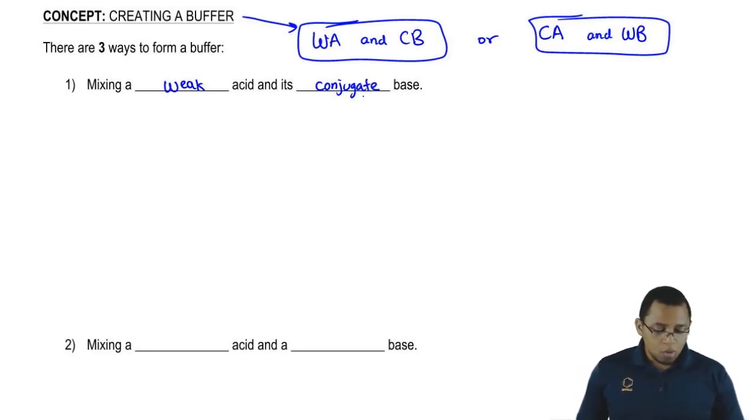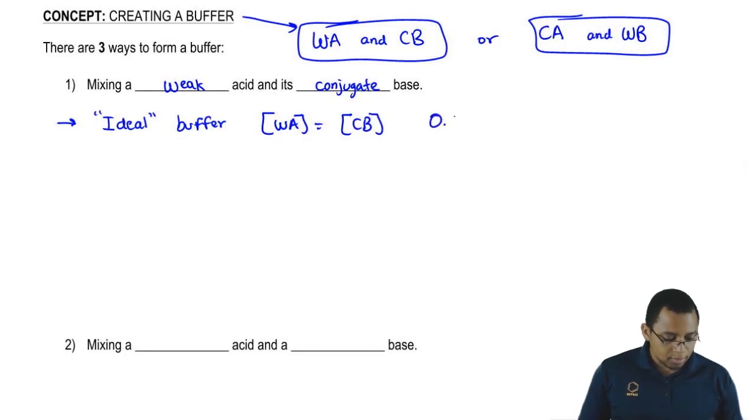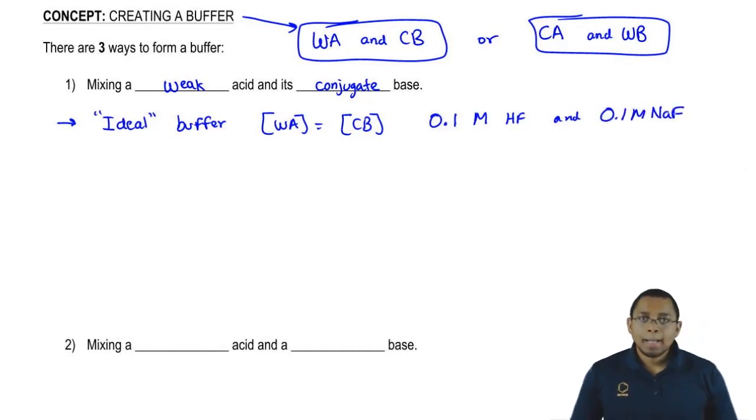For example, we need to realize that a good buffer, an ideal buffer, means this is the best type of buffer. An ideal buffer is when our weak acid equals our conjugate base. They're the same amount. Let's say we have 0.1 molar HF and 0.1 molar NaF. We should realize that the numbers could be different for them but they work best when they're the same.